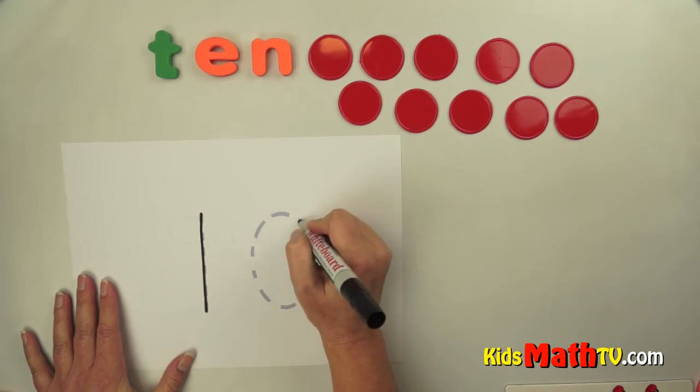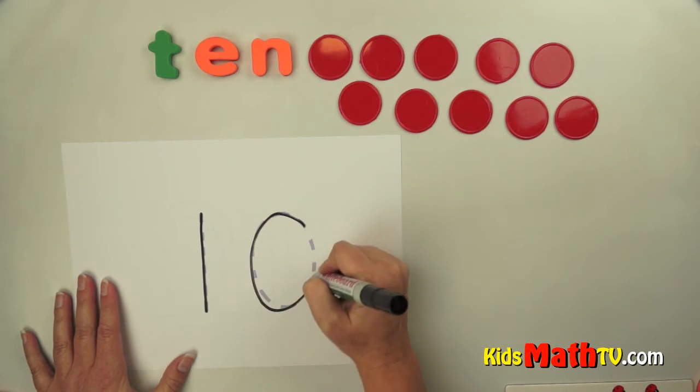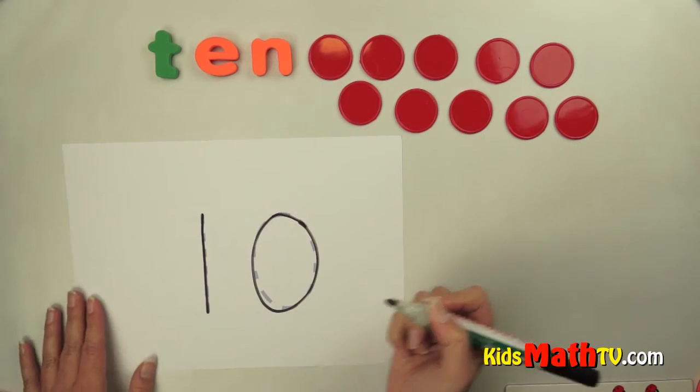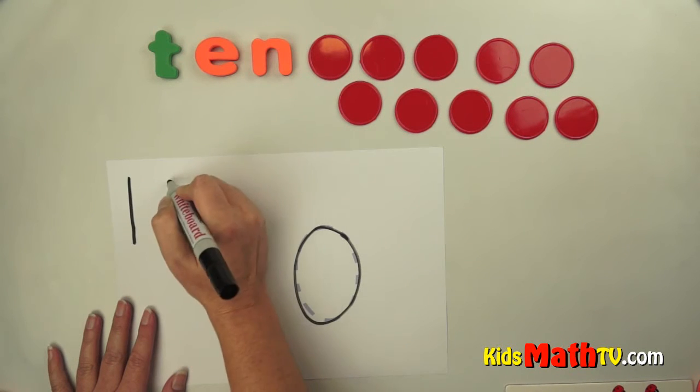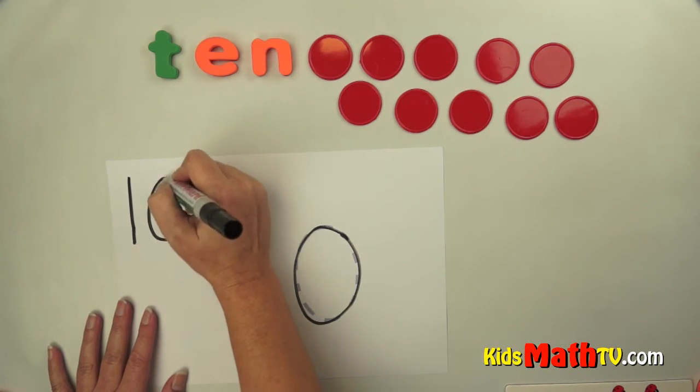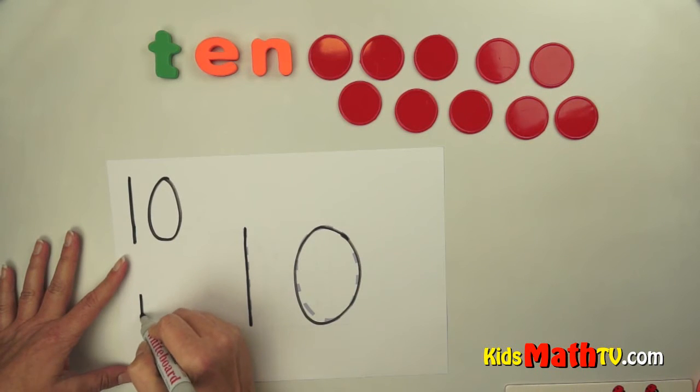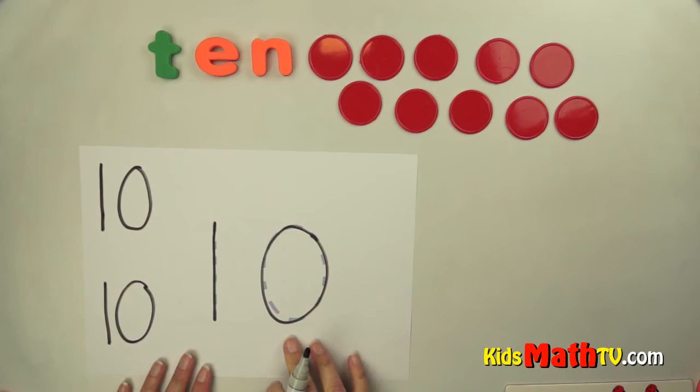1, straight down. 0, 10. Draw a little bit smaller one. 10 is a 1 and a 0. 1 and a 0. 10.